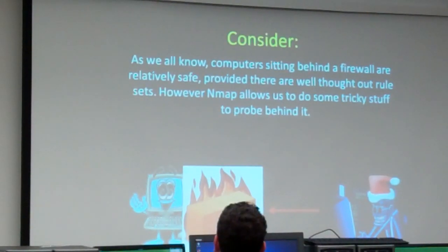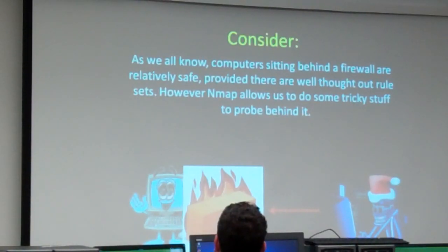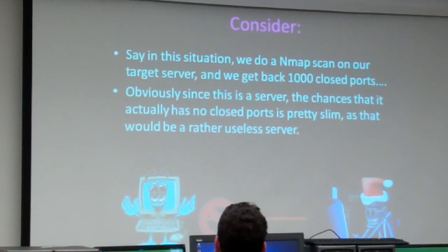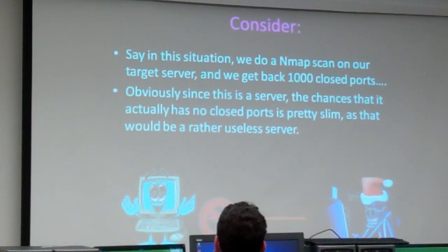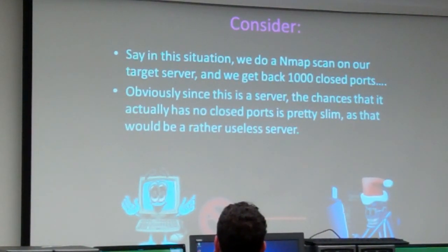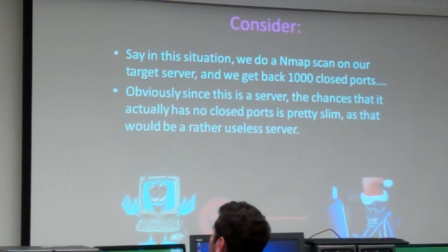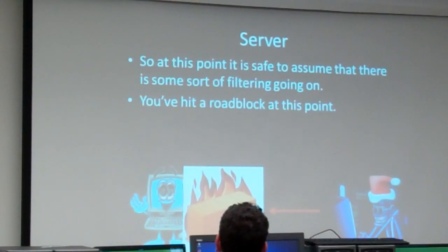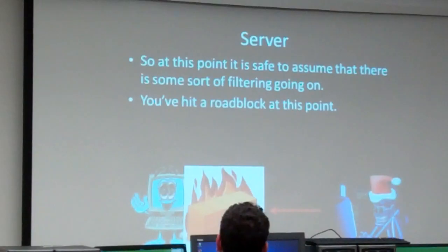So first, we've got our computer sitting behind a firewall and we're trying to attack it. We don't know there's a firewall yet because we don't have physical access, so we try to scan the ports and we get 1,000 closed ports back — NMAP scans the top 1,000 by default. If it's a server we're scanning, obviously some ports have to be open, because if none are open it's a rather useless server. So we've got to think, obviously there's some filtering going on. At this point we can assume there's some sort of firewall.